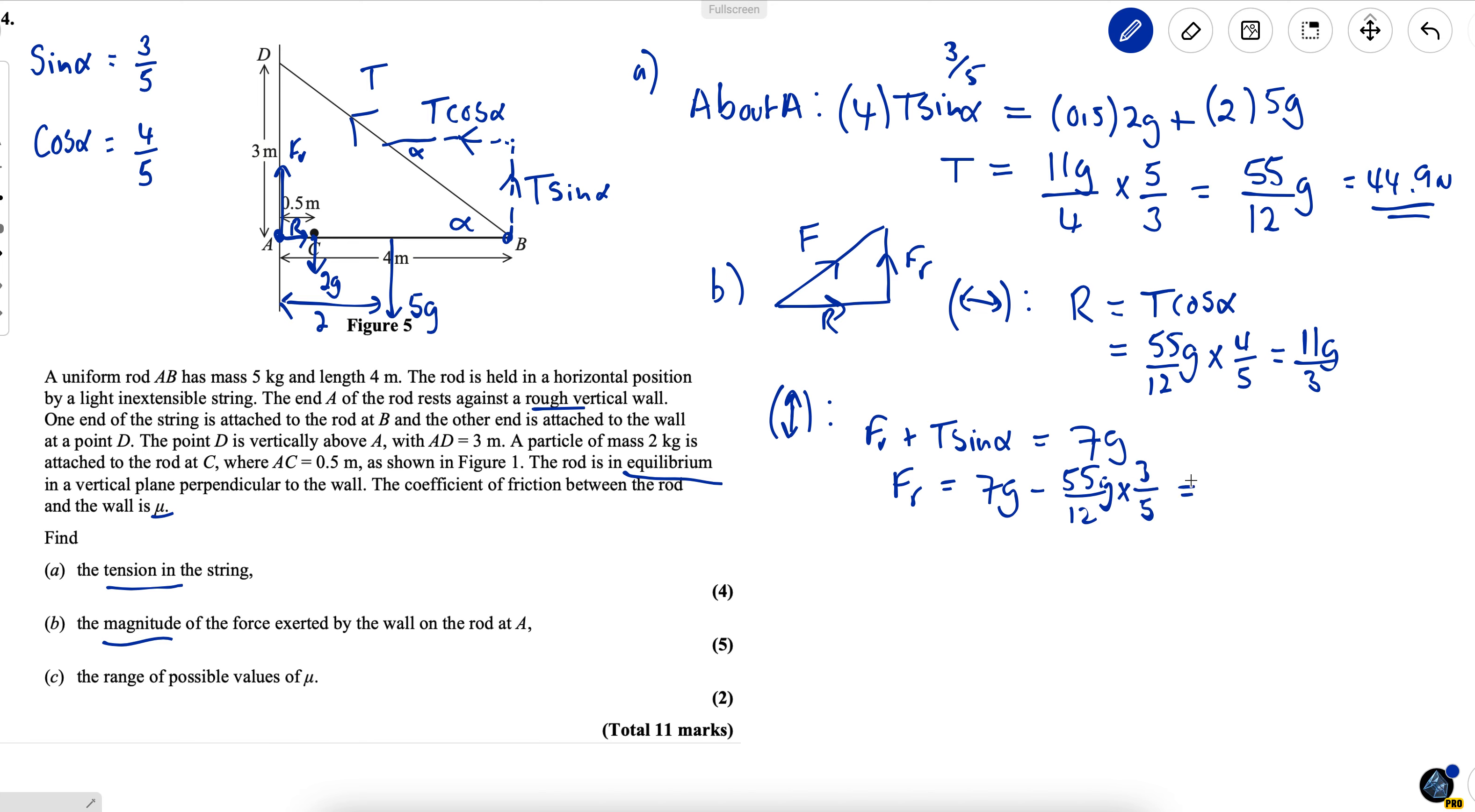Now I can use Pythagoras to find the magnitude of F which is to three significant figures 55.0. So the last part I have to find the range of possible values for mu so this takes a little bit of understanding.